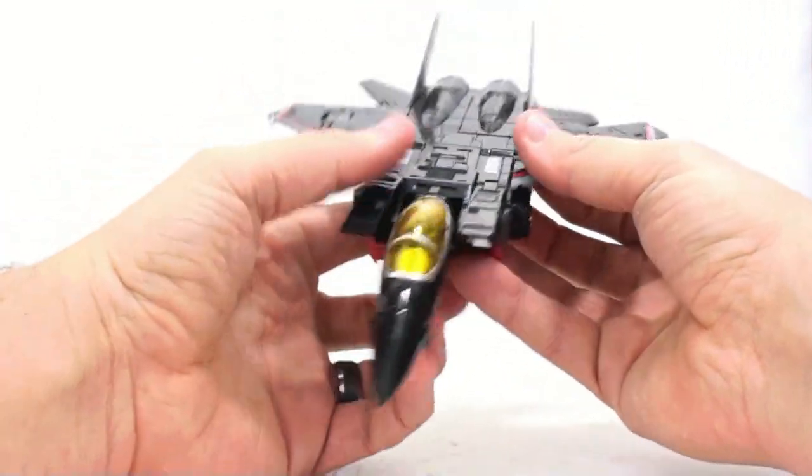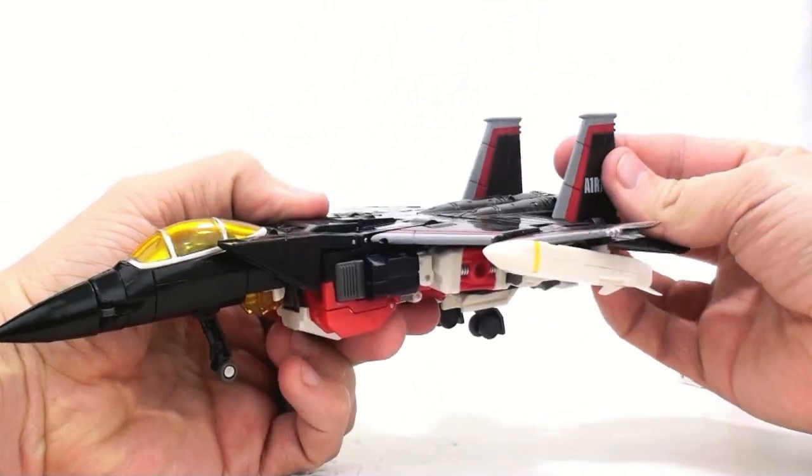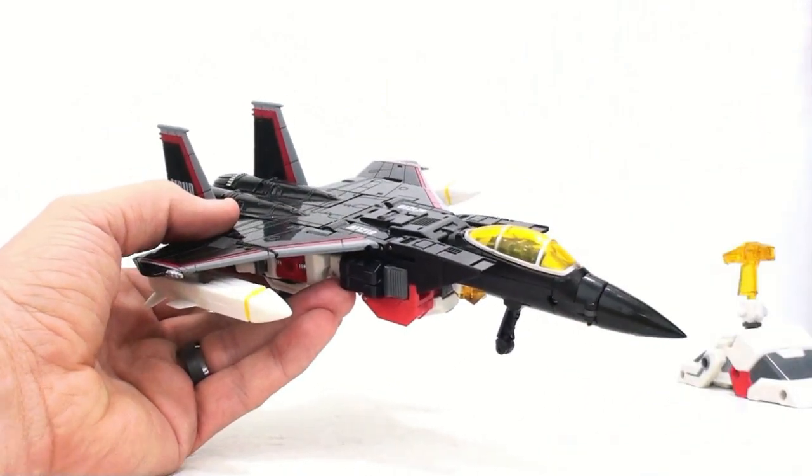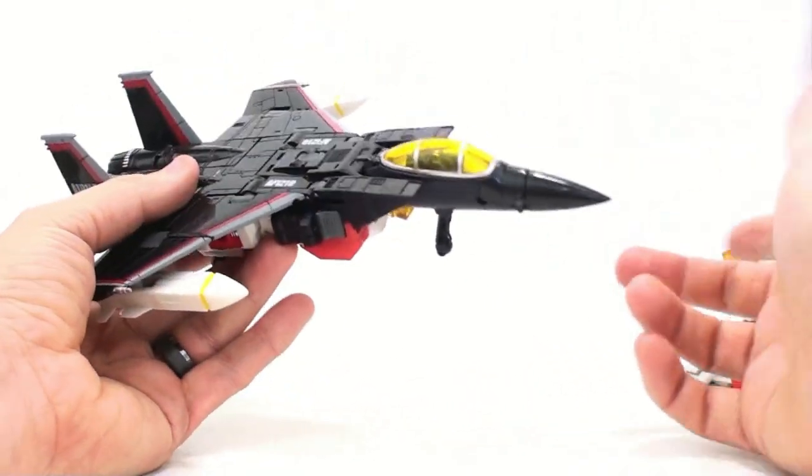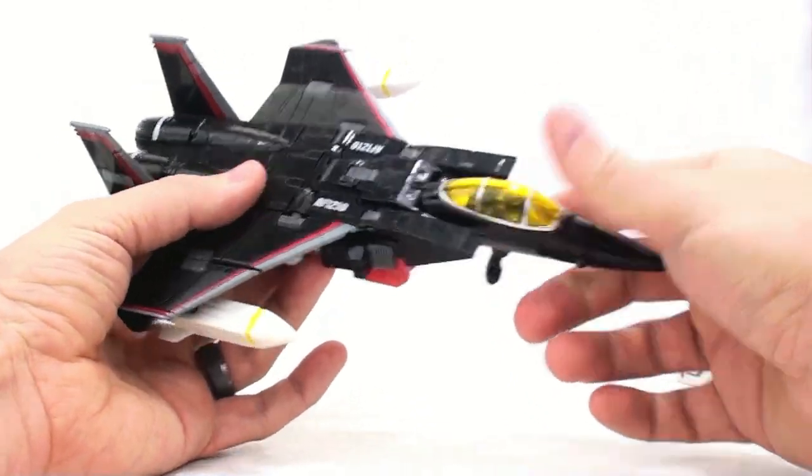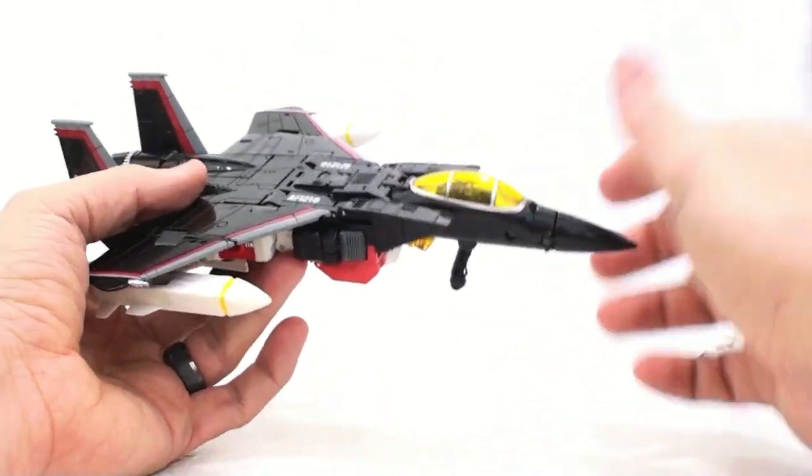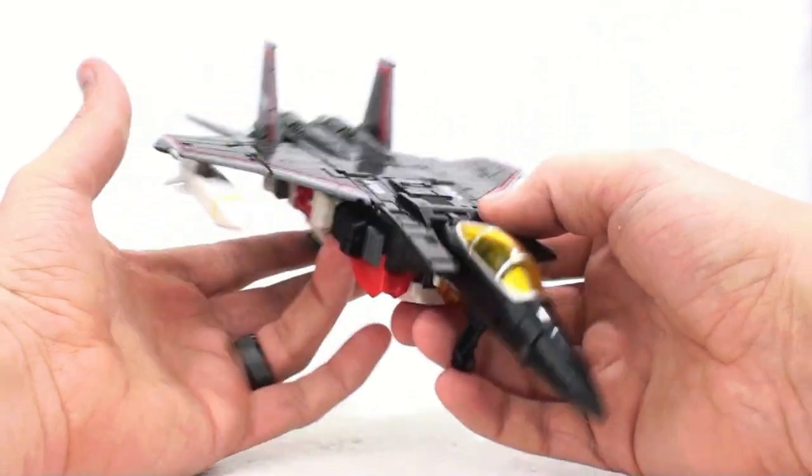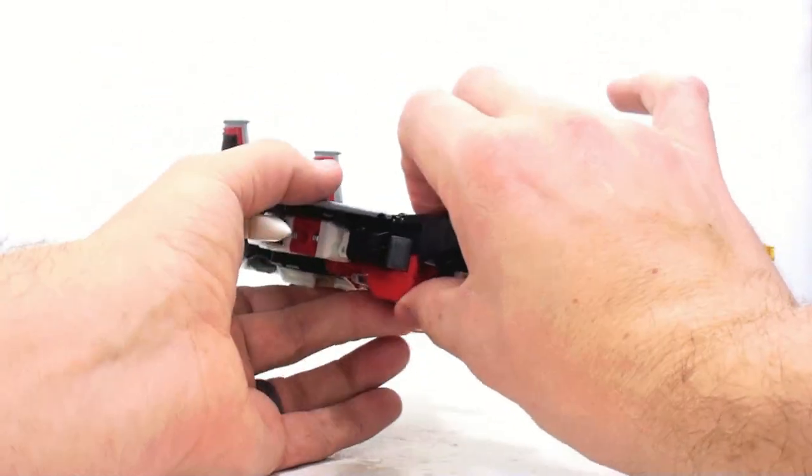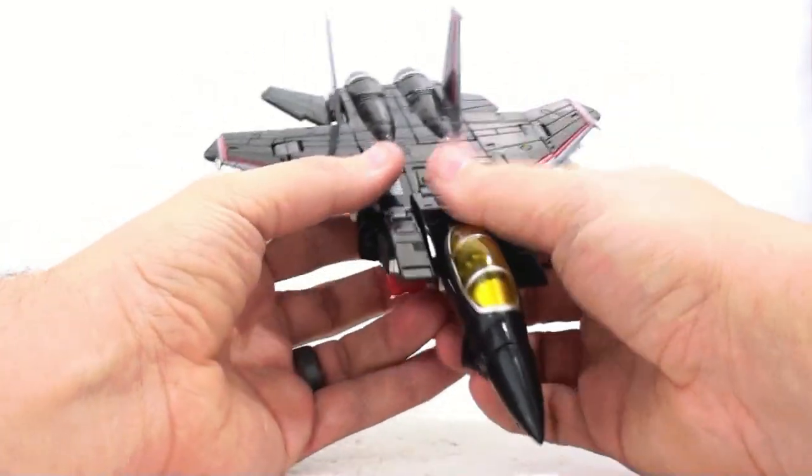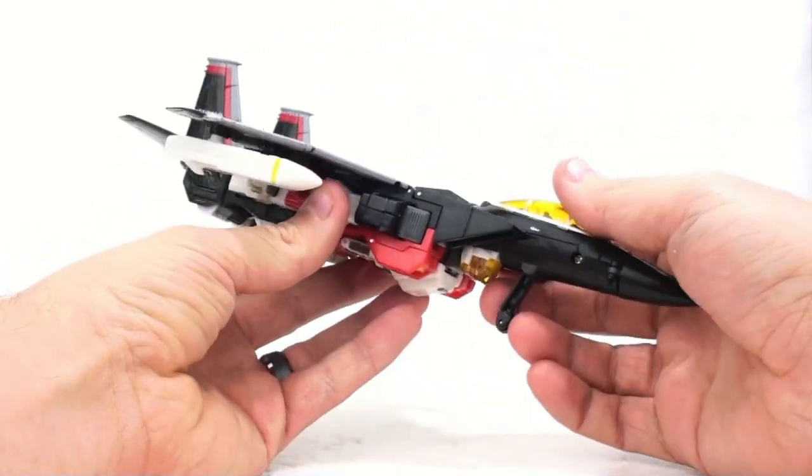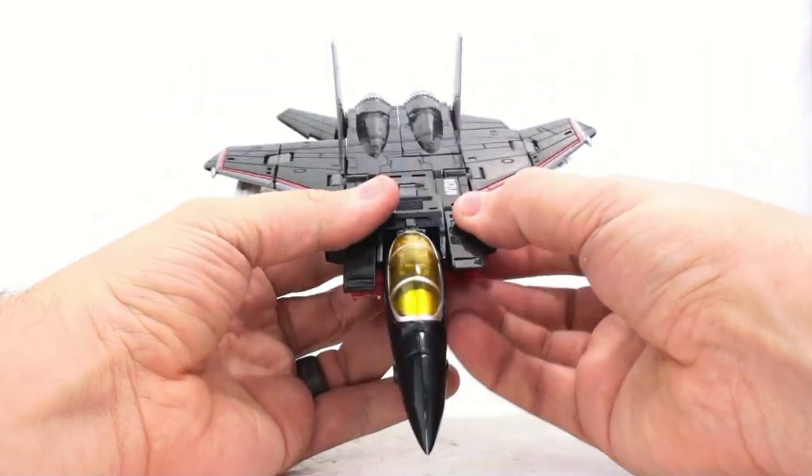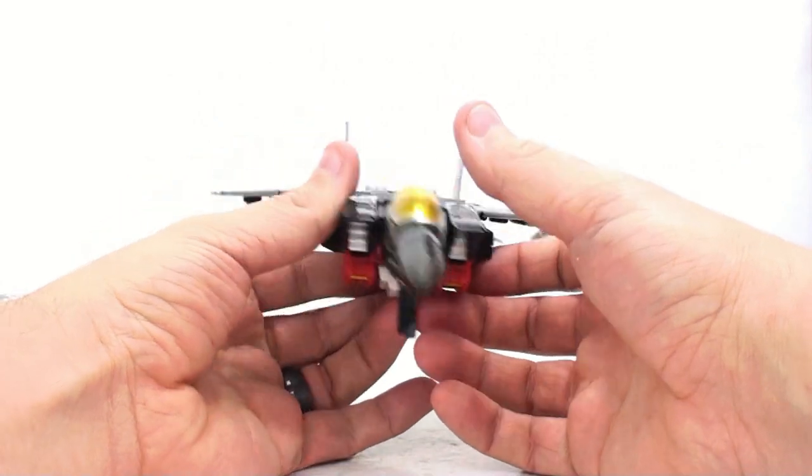As you're seeing here, one of my biggest complaints, I will be totally honest, is that things don't seem to stay together nearly as well on this figure as previously released items from TFC Toys. The biggest one being this section here, the nose cone. It stays there okay, but you bump it around and it seems to pop out. Same thing with these. These don't like staying down really at all. They constantly flop up. Very loose. Well, not really loose. They just don't really securely tab into anything all that well.